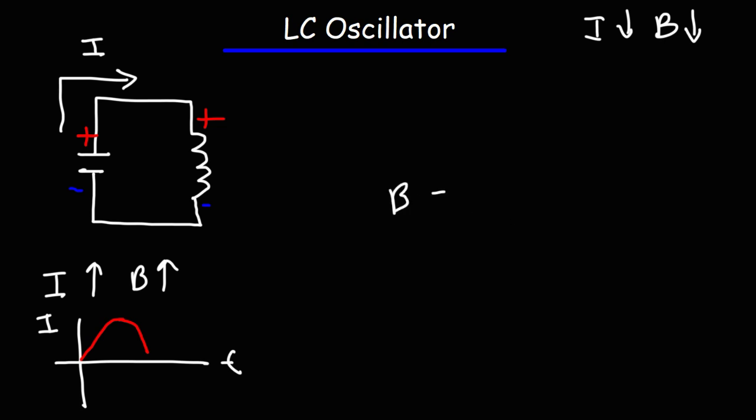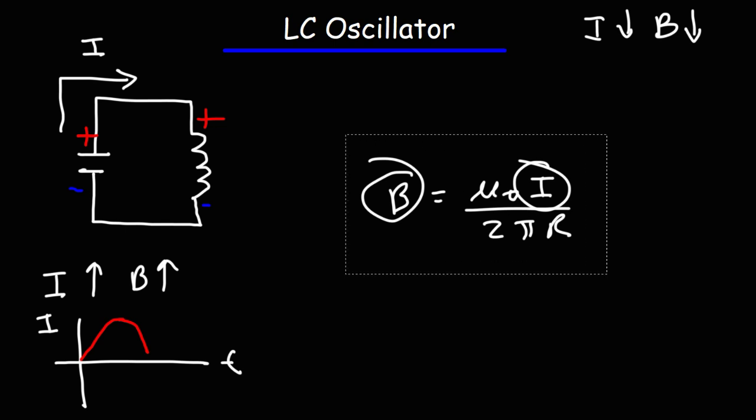Here's a formula that tells you the strength of the magnetic field along a current carrying wire. As you can see, the strength of the magnetic field is directly proportional to the current. So if the current goes down, the magnetic field collapses.